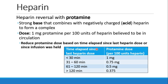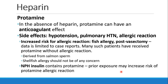Heparin is reversed with protamine. Since heparin is an acid, protamine is a strong base that combines with the negatively charged heparin to form a complex. The dose of protamine is 1 milligram of protamine per 100 units of heparin believed to be in circulation. If you just gave heparin, it's easy. But if it's been a while since you gave the heparin, we have to calculate and perhaps reduce our protamine dose based on how much time has elapsed. This chart shows one example of an approach to protamine dosing, showing the full 1 mg per 100 units of heparin if dosed recently, and scaling back to 0.75, 0.5, or even 0.375 milligrams per 100 units if the heparin was last dosed more than two hours ago. In the absence of heparin, protamine can actually have its own anticoagulant effect, so don't think of protamine as something that promotes coagulation — it only inactivates heparin.